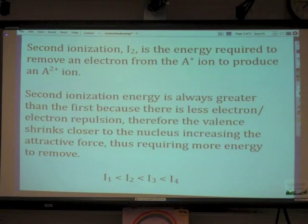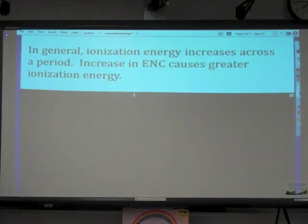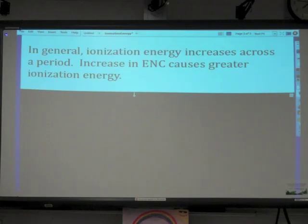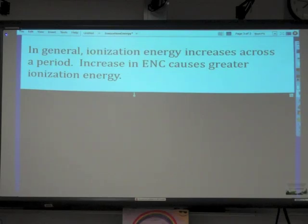In general, ionization energy is going to increase across a period, because as you go across a period you get an increase in effective nuclear charge. An increase in effective nuclear charge results in a greater ionization energy. It's the opposite of atomic radius — as atomic radius or ionic radius gets smaller, ionization energy gets greater, because the closer we get to the nucleus, the more energy it takes to remove an electron.